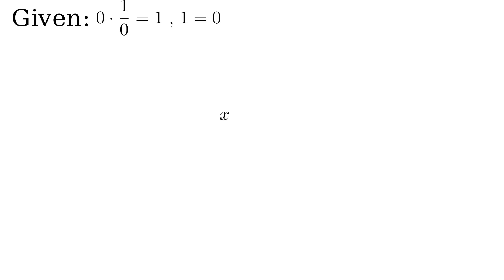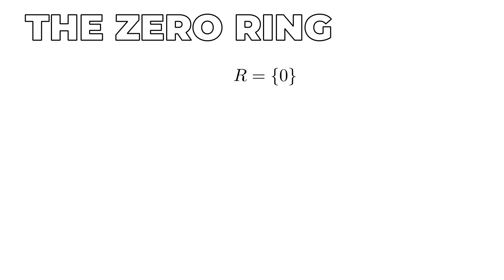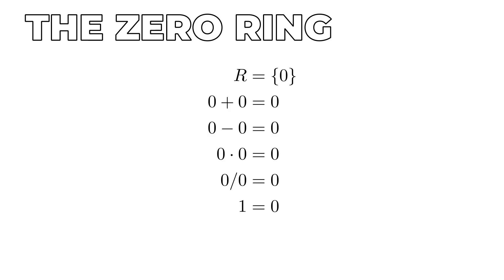Take any number x in this system and note that x is one times x, because one times anything is that thing. But because one equals zero, this is also zero times x, which of course is zero, because zero times anything is zero. Thus we've shown in our new number system that every number equals zero. There's still no contradiction, no error in logic. We've just invented what's called the zero ring, where zero is the only number. Zero plus zero equals zero. Zero minus zero equals zero. Zero times zero equals zero. Zero divided by zero equals zero — and one is just another label for zero. Feel free to check that this number system satisfies all the normal rules of algebra. It really does. So it's not that you can't divide by zero. It's just that if you allow it, then all numbers are zero, and you get what you deserve.